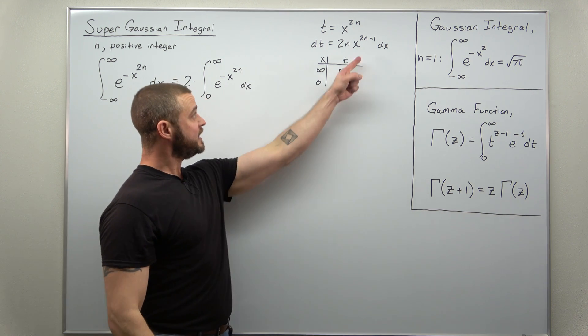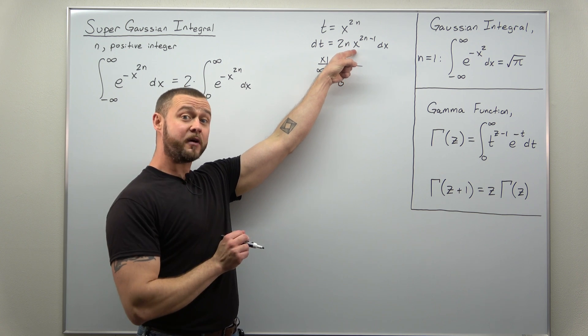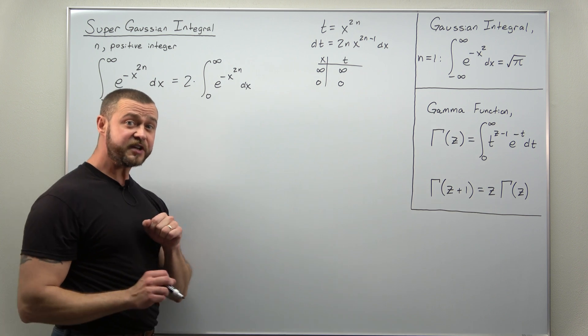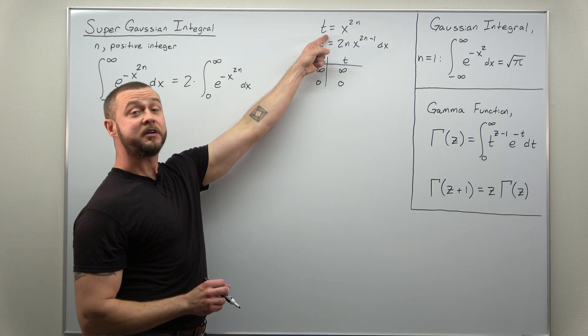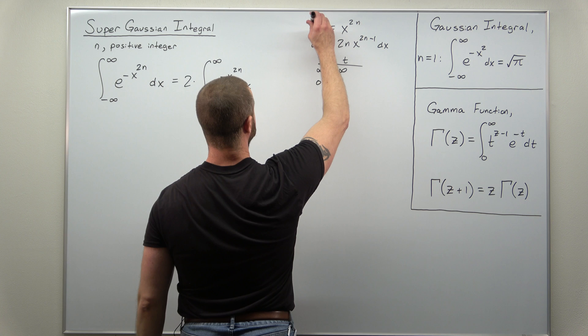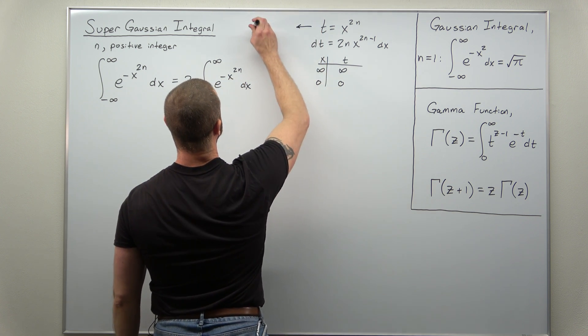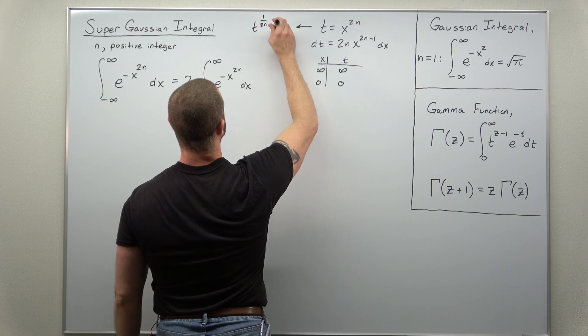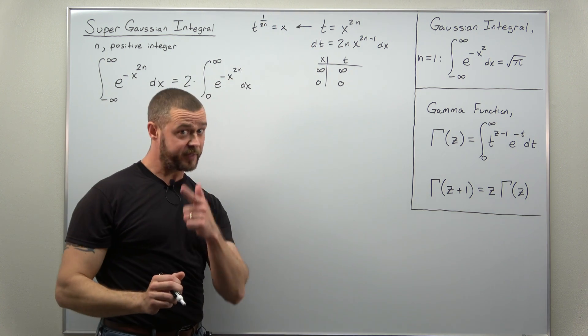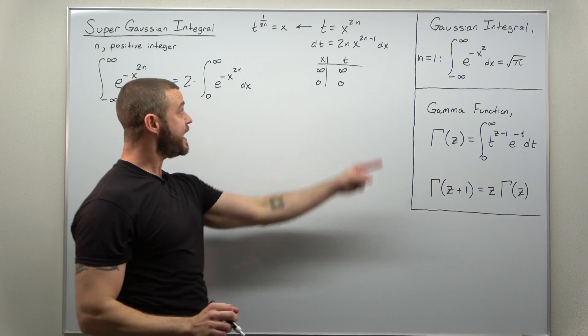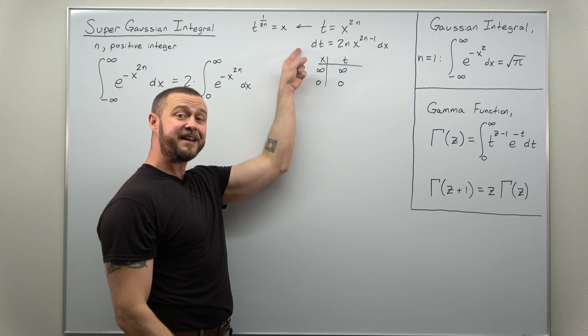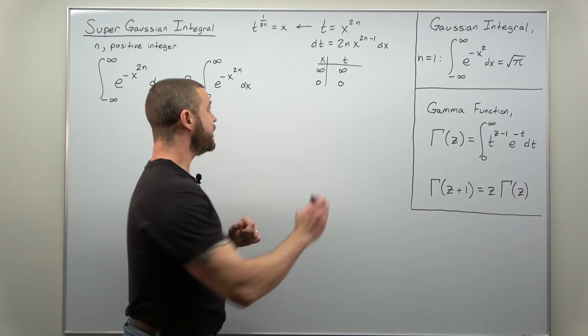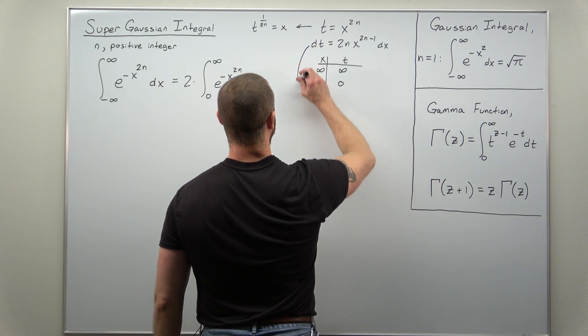The real work is in converting that power of x, which is missing in the integral here. Now the easiest way to do this is to first solve your substitution for x. And you can rewrite that as t raised to the 1 over 2n power, that'll equal x. And if you take that power of x, divide it to the other side, and then convert x's to t's, you can get your differential as the following.